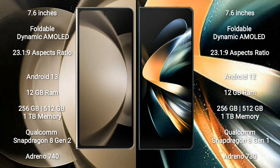Samsung Galaxy Z Fold 4 comes with a 7.6-inch foldable dynamic AMOLED display and success pressure 23-1-9. Samsung Galaxy Z Fold 5 runs on the Android 13 operating system. Samsung Galaxy Z Fold 4 runs on the Android 12 operating system. Samsung Galaxy Z Fold 5 comes with 12GB RAM and 256GB, 512GB, or 1TB internal storage, Qualcomm Snapdragon 8 Gen 2 processor and GPU Adreno 740.